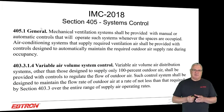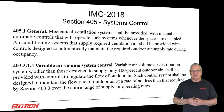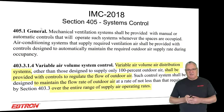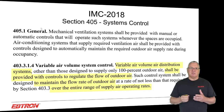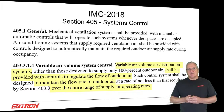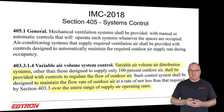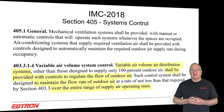The IMC also shows how close it is to Standard 62. Ventilation air shall be provided with controls designed to automatically maintain the required outdoor air supply rate during occupancy. The IMC's variable air volume system control section — which will obviously need to be modified now to include multi-speed constant volume — states: variable air volume air distribution systems shall be provided with controls to regulate the flow of outdoor air to maintain the flow rate over the entire range of supply air operating rates. That's essentially identical to Standard 62, except it doesn't yet say multi-speed constant volume.